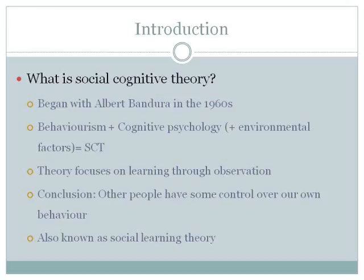So what exactly is social cognitive theory? It began in the 1960s with Albert Bandura, and he combined three different theories or factors: behaviorism — how we behave; cognitive psychology — what goes on inside the mind; and environmental factors, which play a big role in how we learn. The theory focuses on learning through observation — what we see, we try to imitate or not imitate depending on the circumstances — and the conclusion is that other people have some control over our own behavior. The theory is also known as social learning theory in some research.